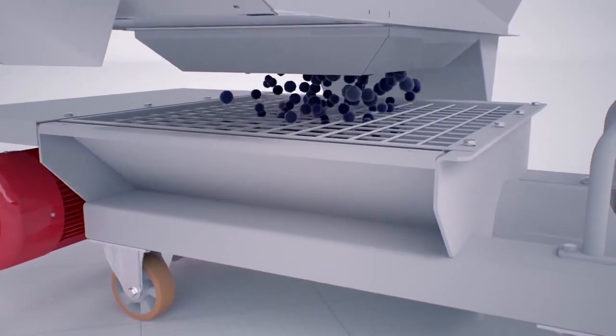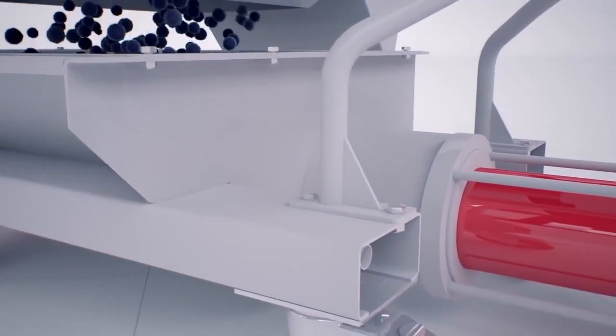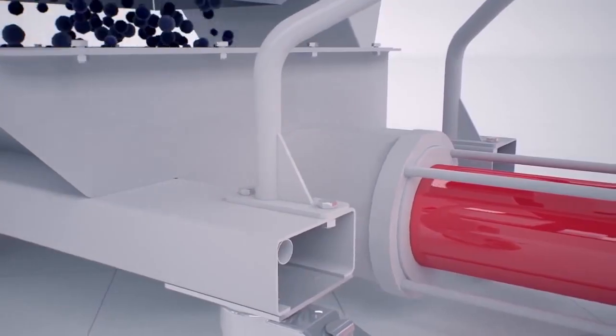The result of this is a semi-liquid mass of seeds, skins, pulp, and juice that must be pumped to the tanks where the alcoholic fermentation will happen.